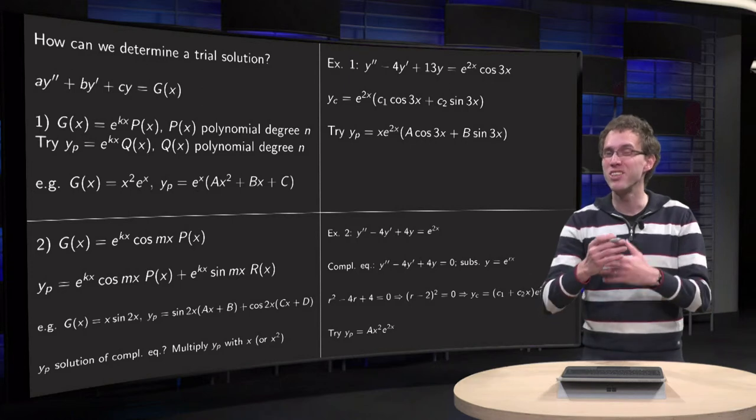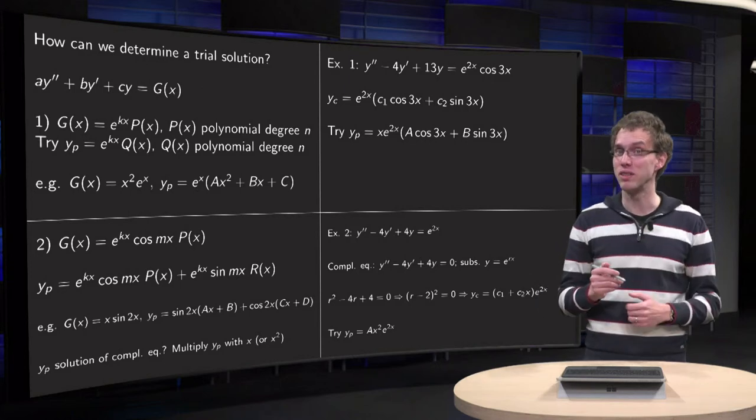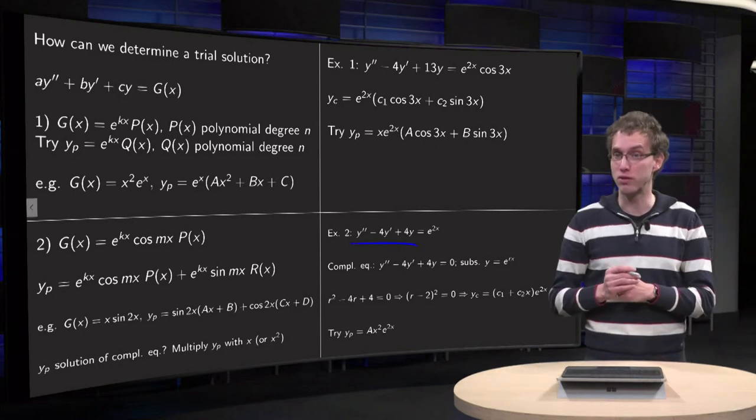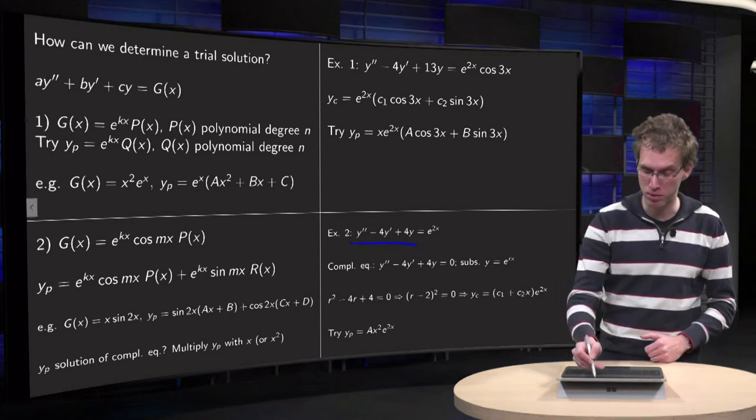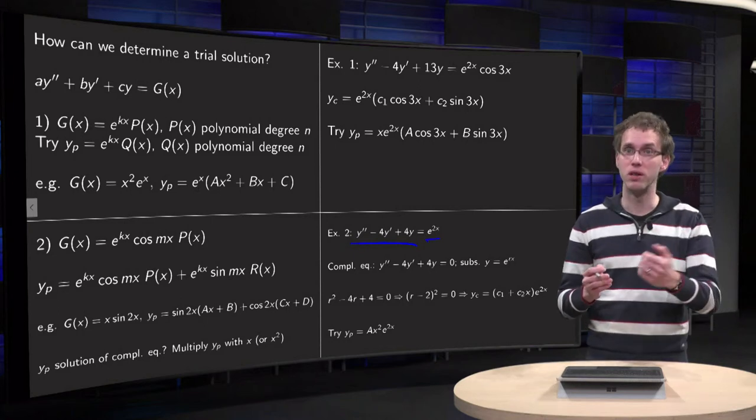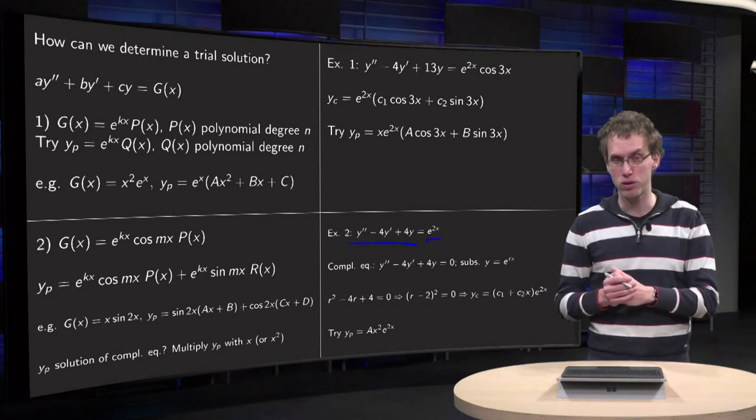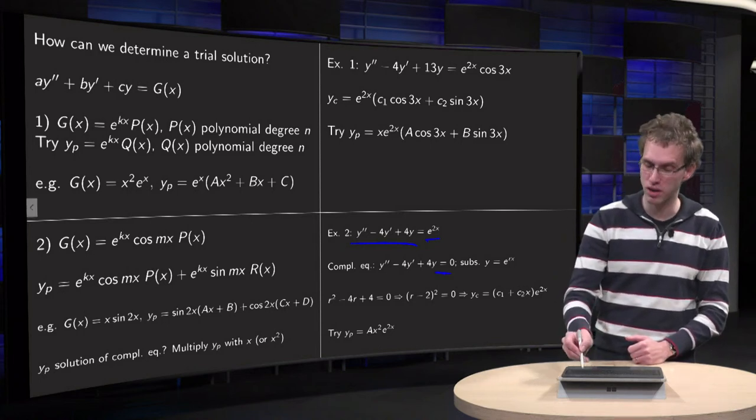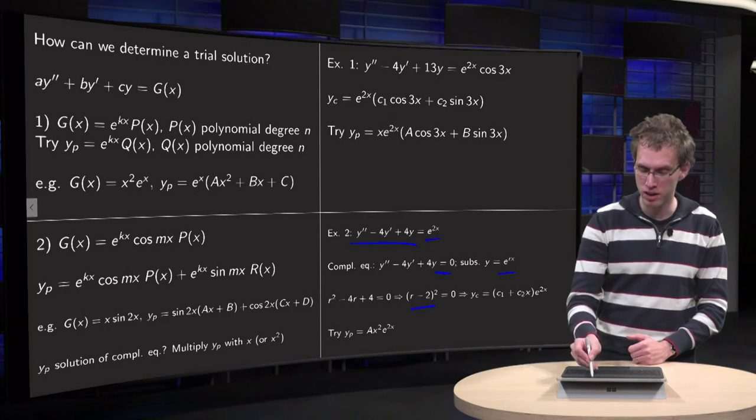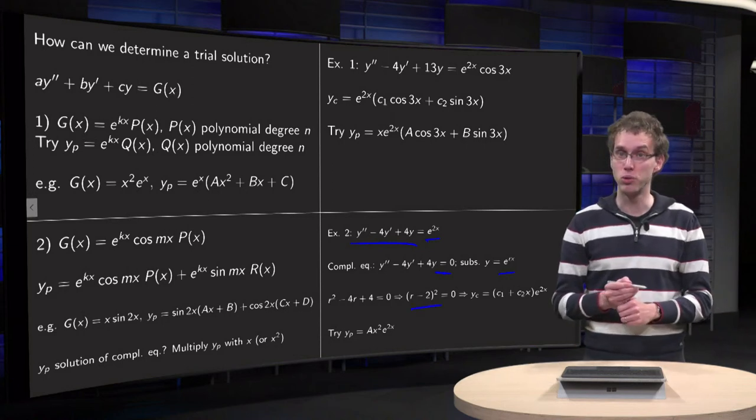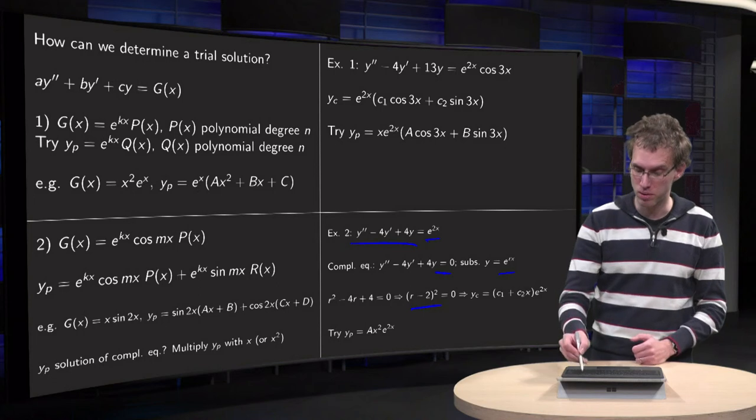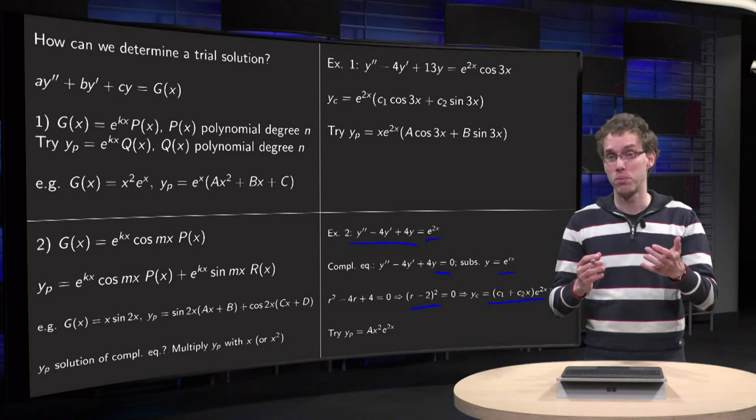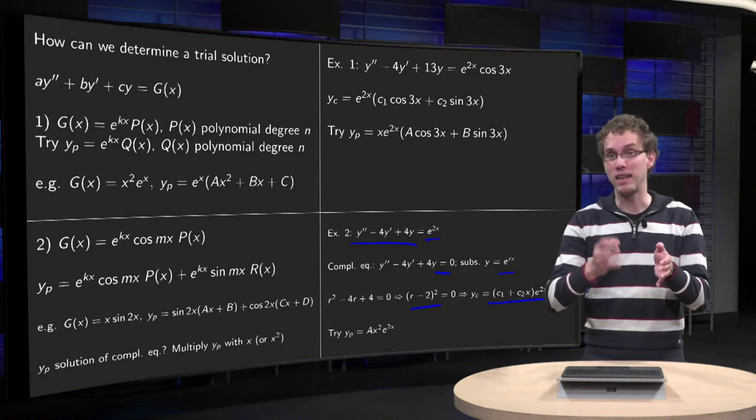And then how do you see whether you may have to multiply with x squared? For example, if you have this case y double prime minus 4y prime plus 4y equals e to the power 2x, compute the solution of the complementary equation first. So set the right-hand side to 0, substitute e to the power rx, and you see that you get 0 of order 2, r minus 2 squared equals 0, so this is your complementary solution.